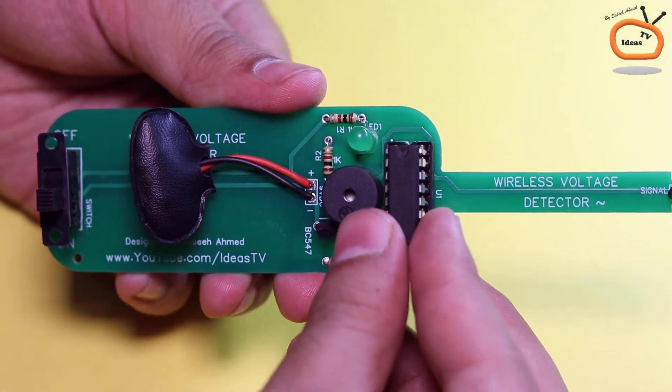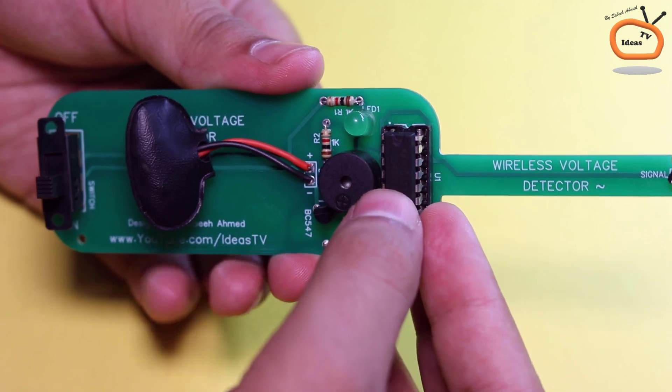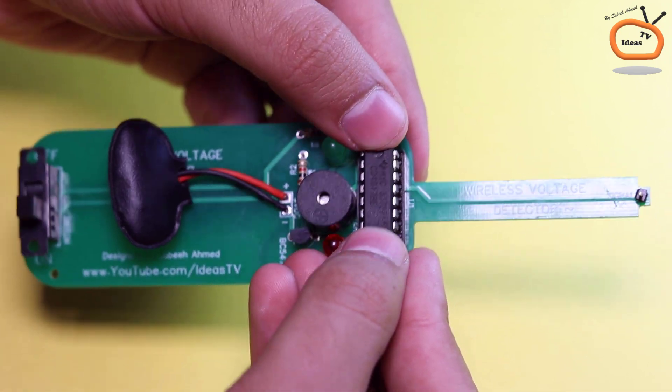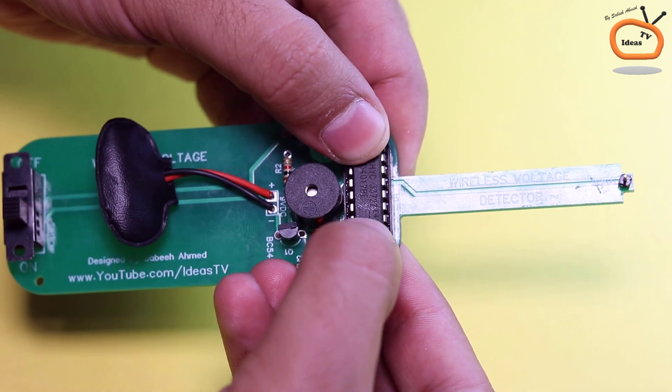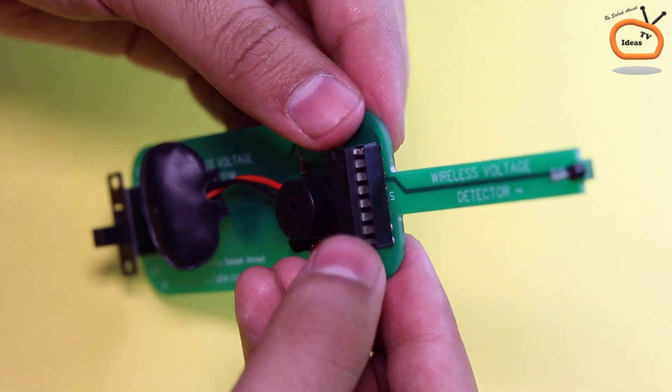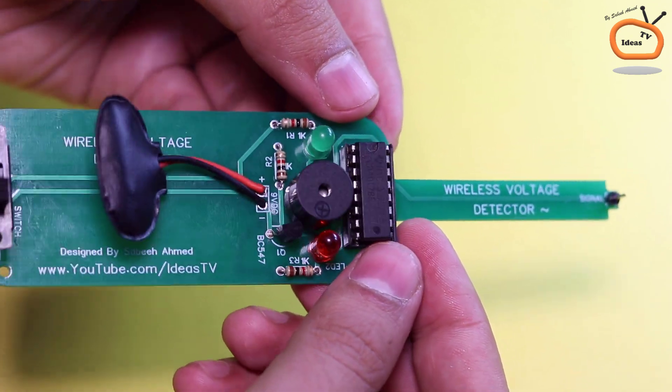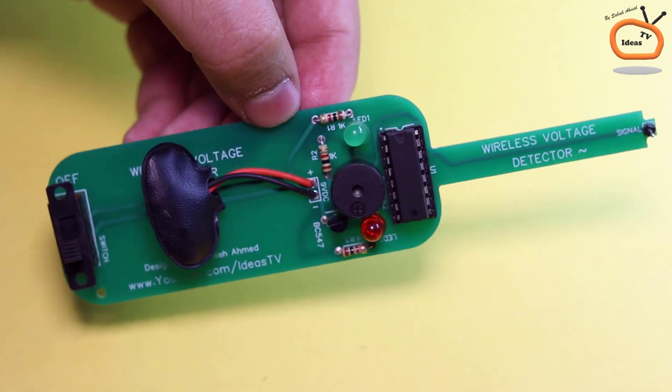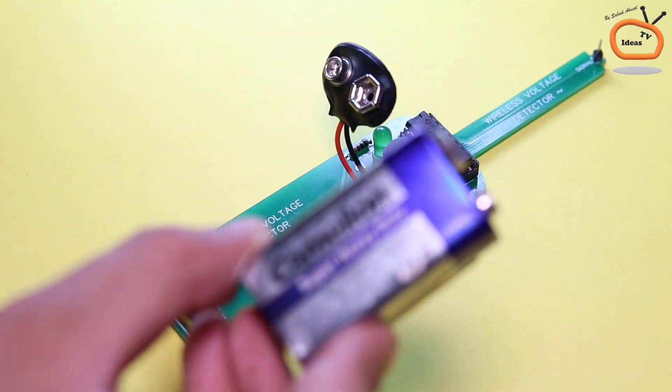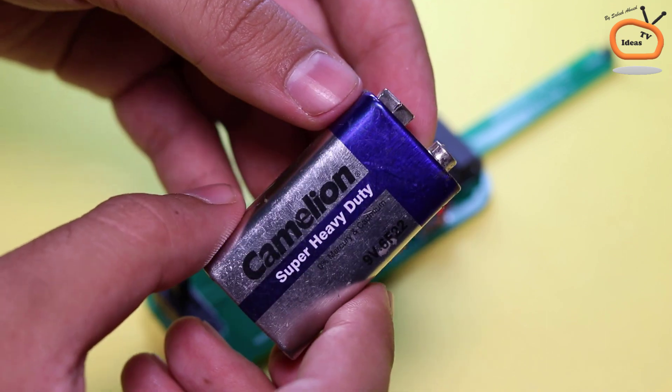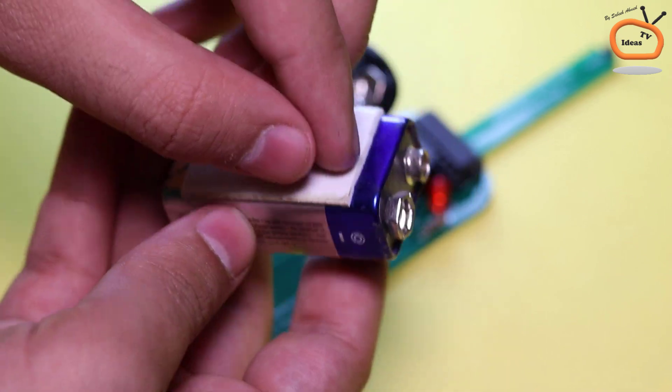Now I am placing the brain of this circuit, the CD4017 IC. Now I am connecting a 9V battery using the double sided tape and the battery connector.